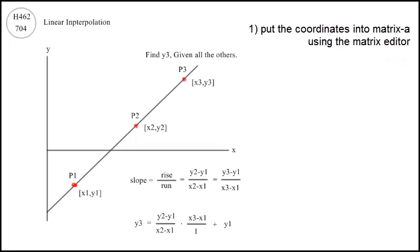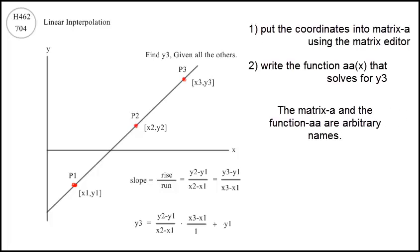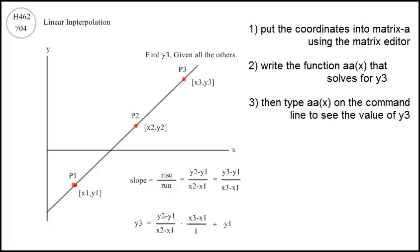This can be automated using the TI-89 calculator. Put the coordinates into matrix A using the matrix editor. Write the function aa(x) that solves for y3. The matrix A and the function aa are arbitrary names. Then type aa(x) on the command line to see the value of y3.